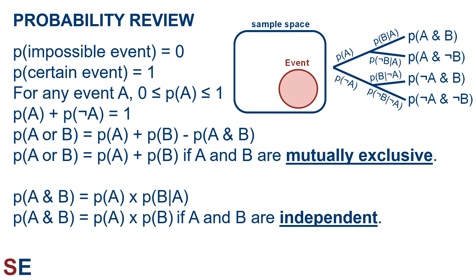The probability of an impossible event is 0, and the probability of a certain event is 1, and all probabilities are therefore between 0 and 1.